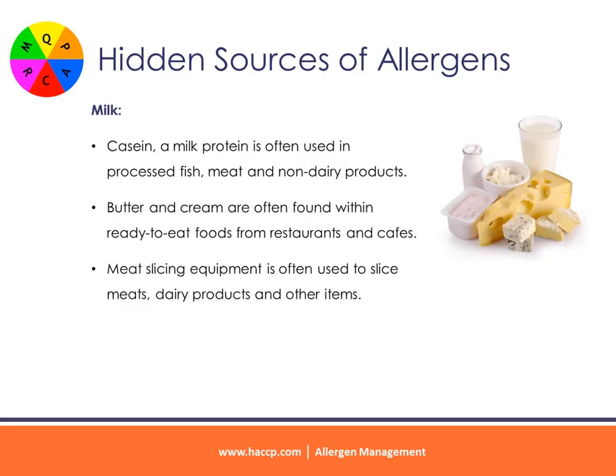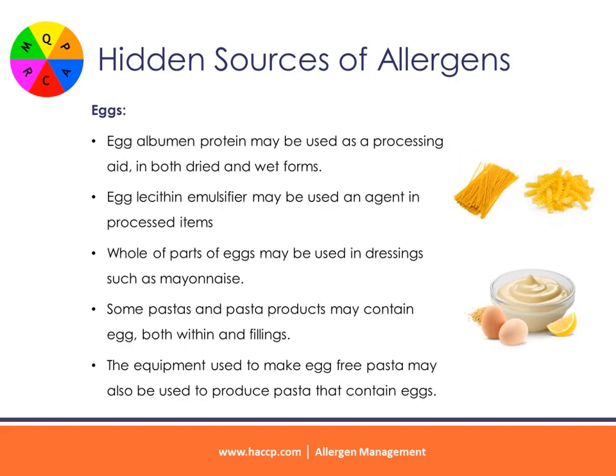Milk: casein, a milk protein, is often used in processed fish, meat, and non-dairy products. Butter and cream are often found within ready-to-eat prepared foods from restaurants and cafes. Meat slicing equipment is often used to slice both meats and dairy products, creating a risk of cross-contact.